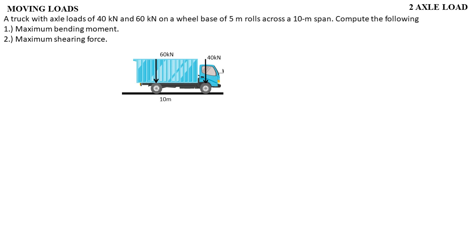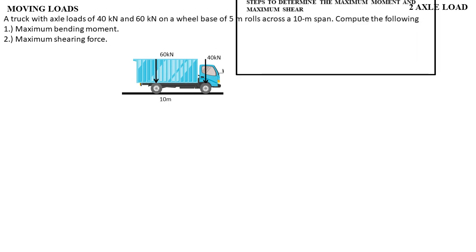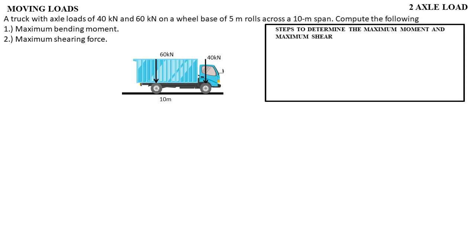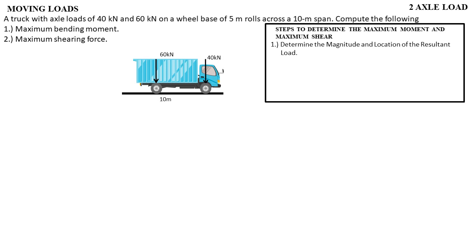To compute this, we follow simple steps. These are the steps to determine the maximum moment and the maximum shear. Number one: determine the magnitude and the location of the resultant load. We need to first find where the resultant load is — its magnitude and its location.